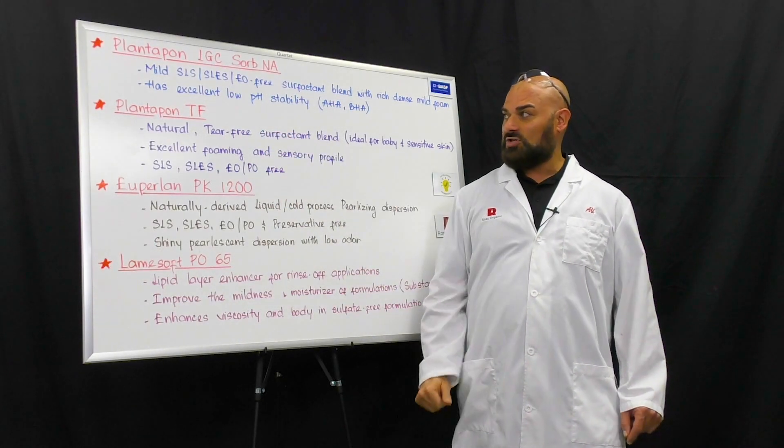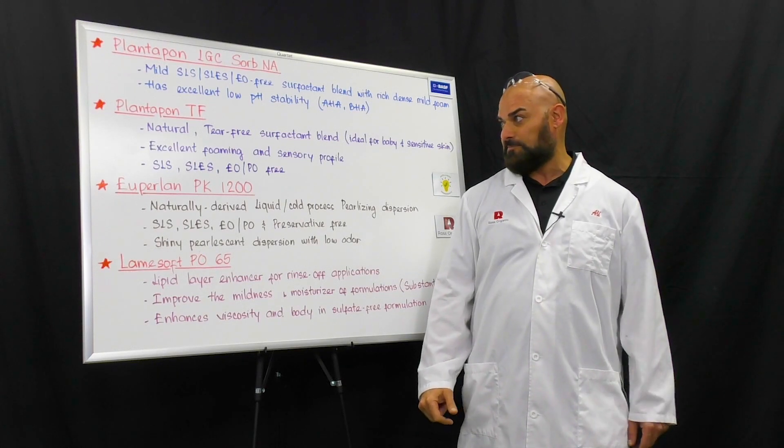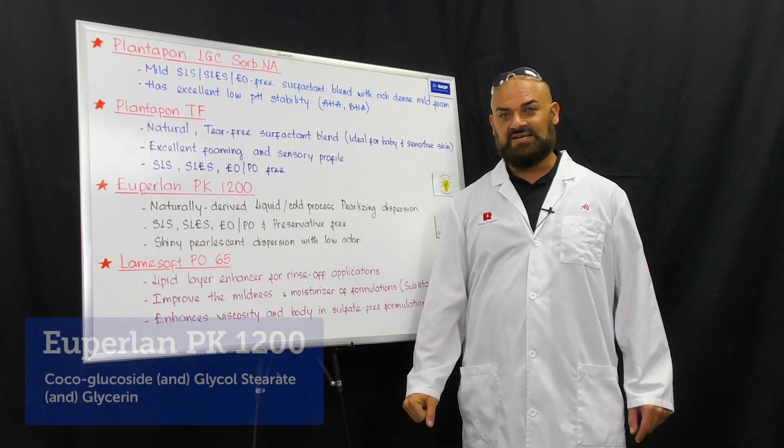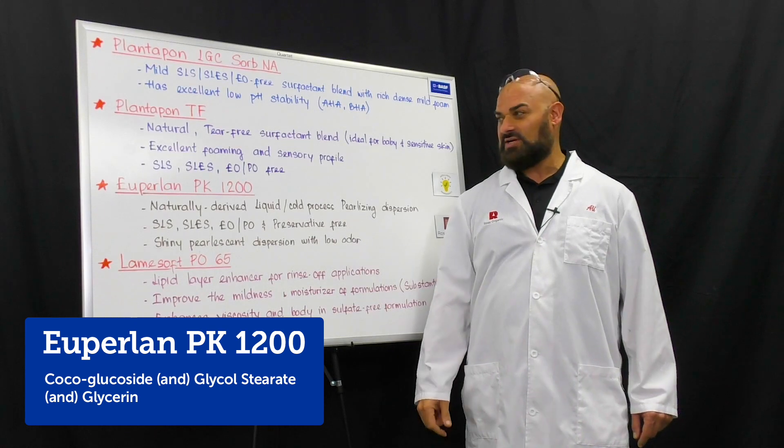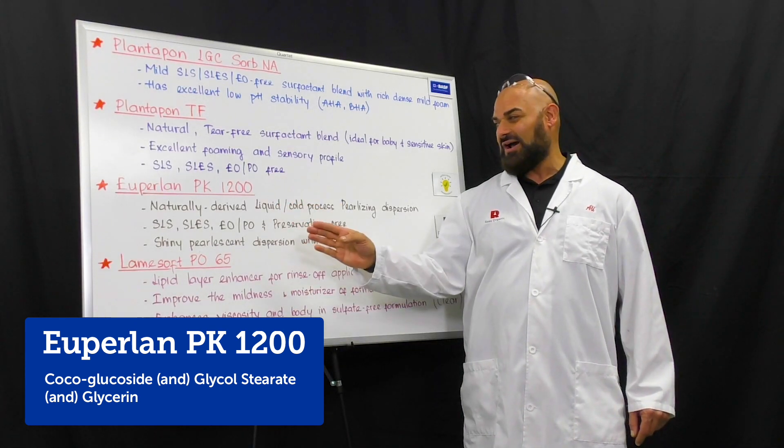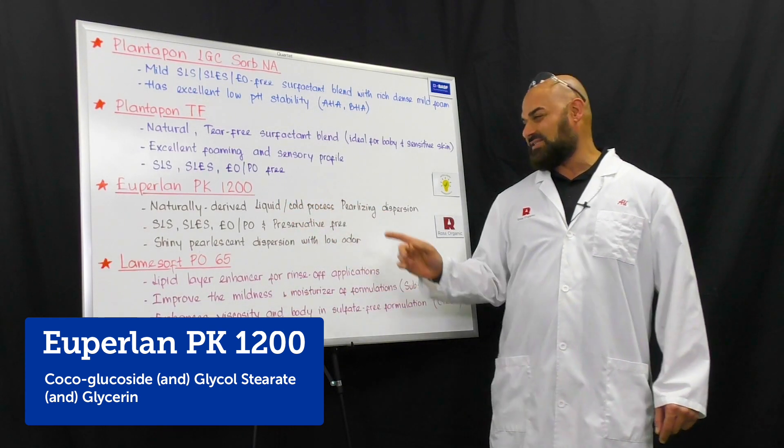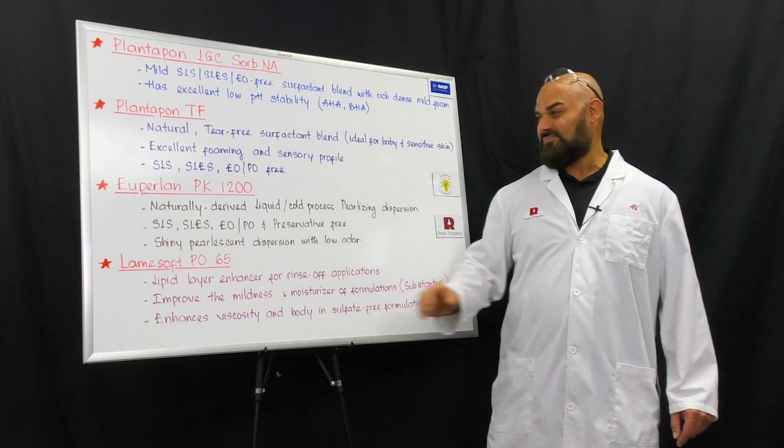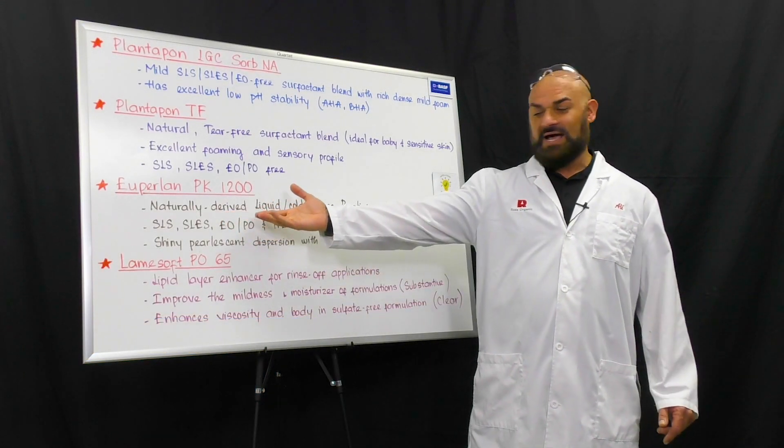The third one is the Uperlin PK-1200. This is a naturally-derived, liquid, cold-processable, pearlizing dispersion. Again, this one is also SLS, SLES,